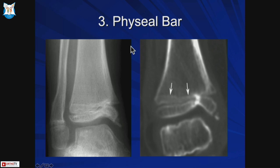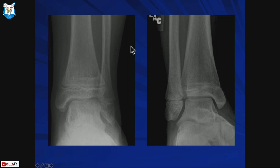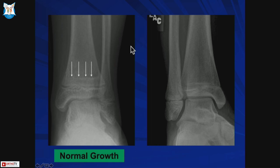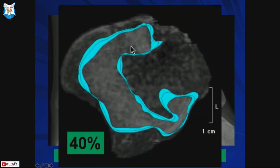For physeal bar diagnosis, you follow the Park Harris line, which usually points toward the area of growth arrest. Described by Park and Harris in 1926-27, the Park Harris growth recovery line should be parallel to the physis for normal growth. Here you can see it is not parallel - it points toward the area of growth arrest. This case shows a 40% bar, which may appear small on x-ray.